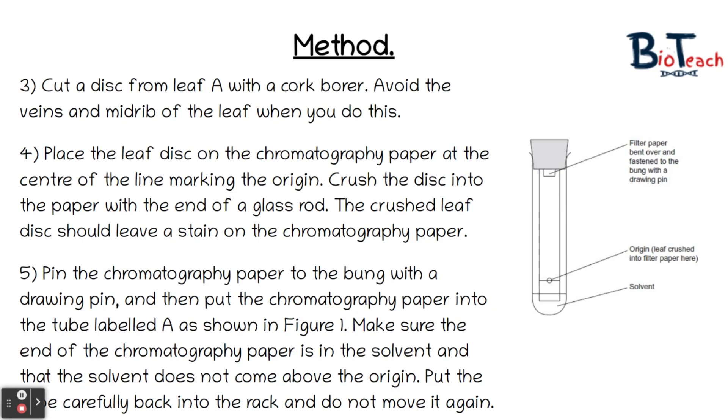Once the stain is present on the line of origin, you can pin the chromatography paper to the bung with a drawing pin and then pop the chromatography paper into the tube labelled A as shown in the diagram. You have to make sure the end of the chromatography paper is in the solvent and the solvent does not come above the origin line, as shown by that diagram as well. Then just pop the tube carefully back onto the rack and don't move it again.